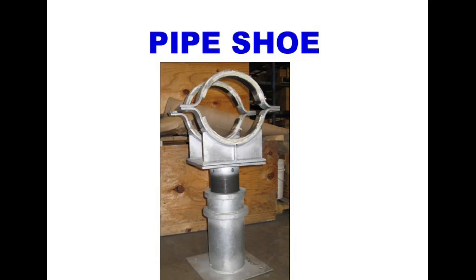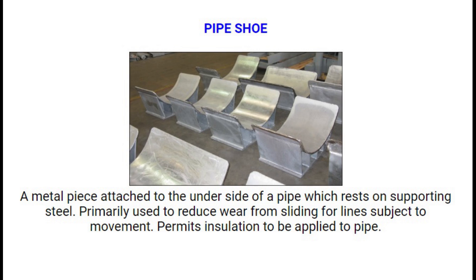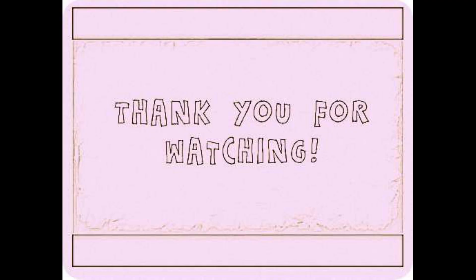Number 14: Pipe Shoe. Pipe Shoe is a metal piece attached to the underside of a pipe which rests on supporting steel. Primarily used to reduce wear from sliding for lines subject to movement, and permits insulation to be applied to the pipe.